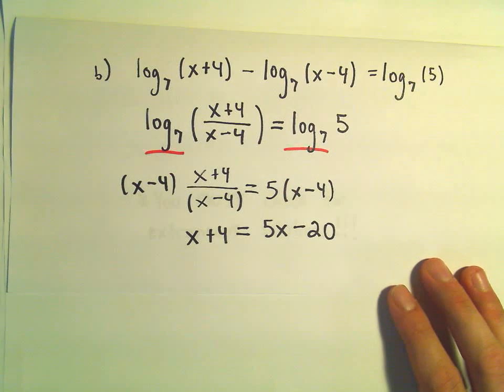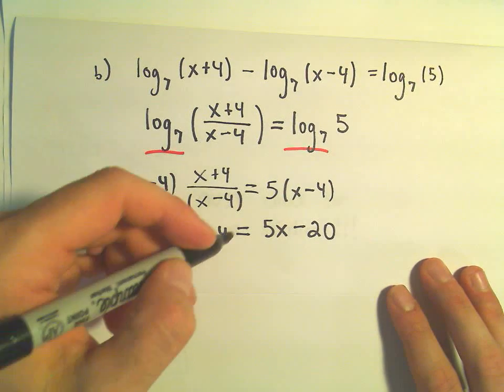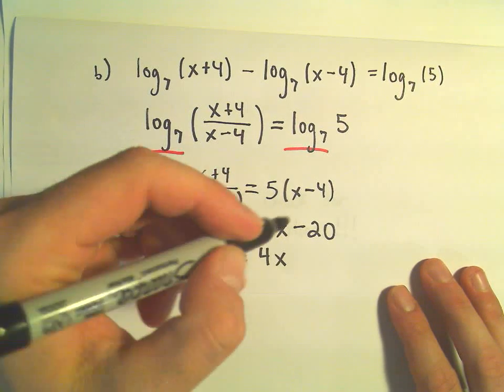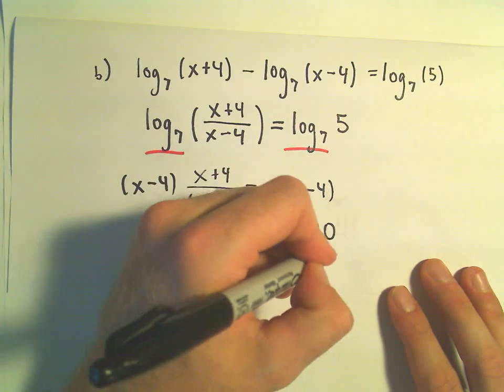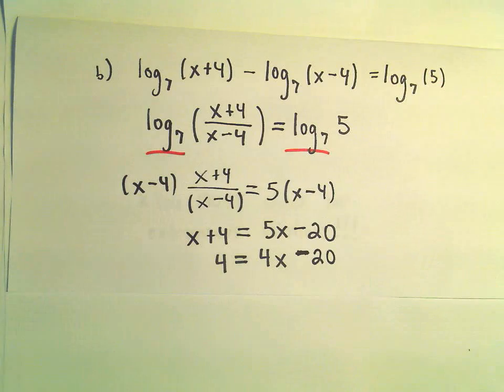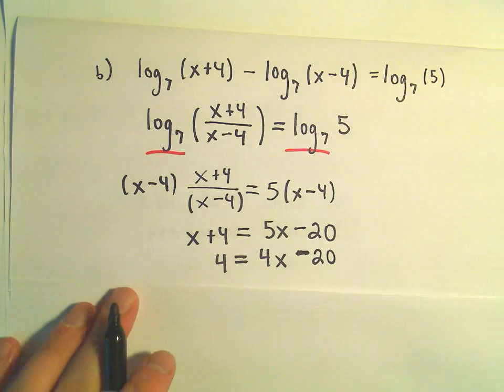And now I'm simply trying to solve for x. We can subtract x from both sides, that would leave me with 4 on the left. And now 4x on the right minus 20. Then we can simply add 20 to both sides.